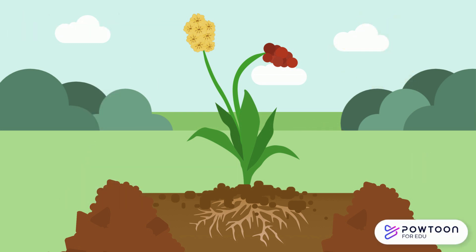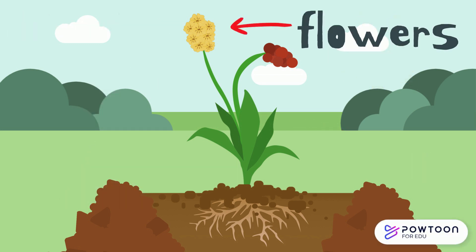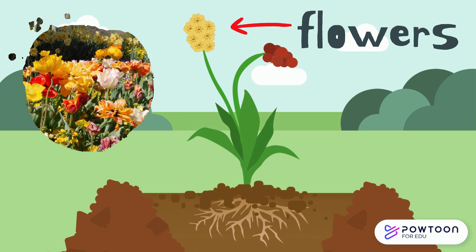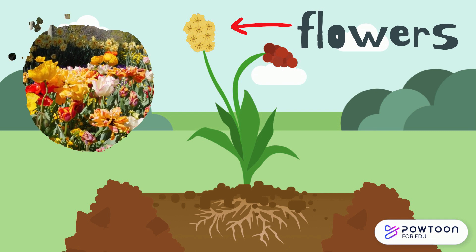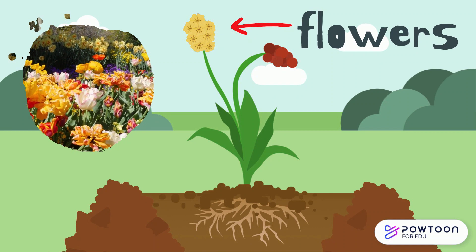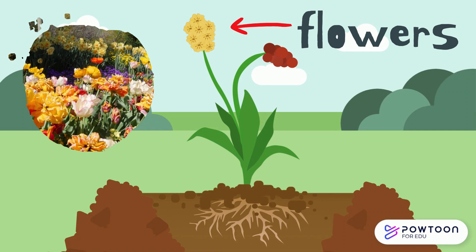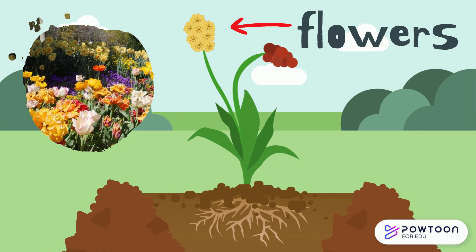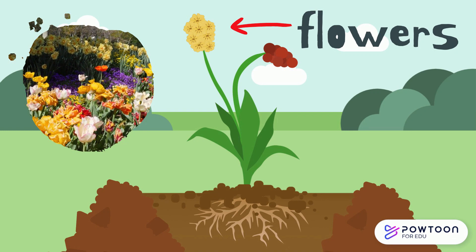My favourite part now — flowers. Flowers are the reproductive part of a plant and they produce seeds which can grow into new plants. Flowers come in all shapes, sizes and colours and they're what make a lot of plants so beautiful.